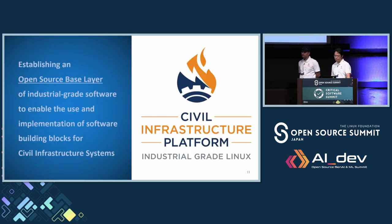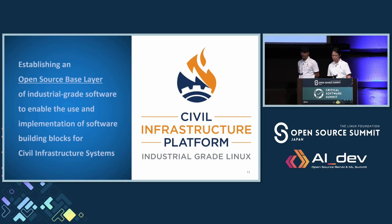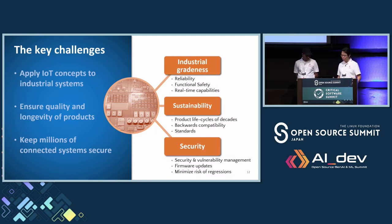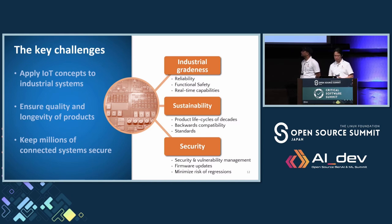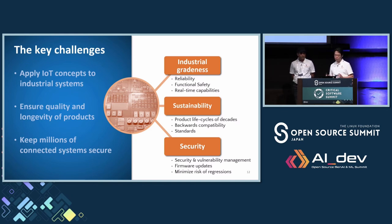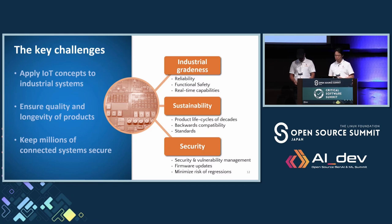This is where CIP comes in. Our mission is to establish an open source base layer of industrial-grade software for civil infrastructure systems. We are building the foundation of secure, reliable, and long-lasting infrastructure. Achieving this goal is not simple. We need to apply IoT concepts to industrial systems while ensuring they meet strict requirements. We must ensure quality and longevity for products that have a decade-long life cycle, keeping millions of connected systems secure, ensuring backward compatibility, and meeting various industrial standards such as reliability, safety, and real-time capabilities.